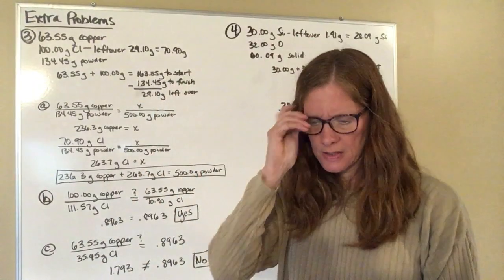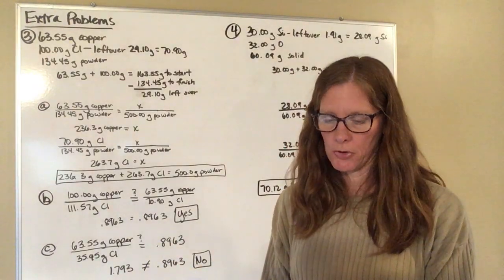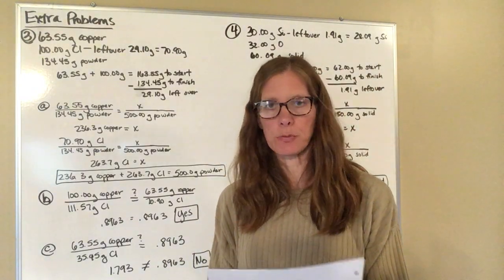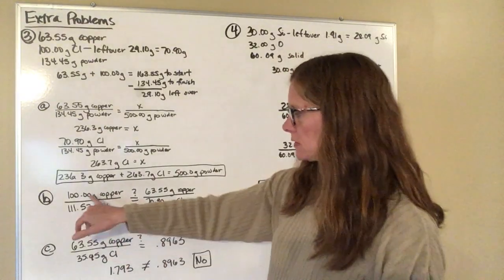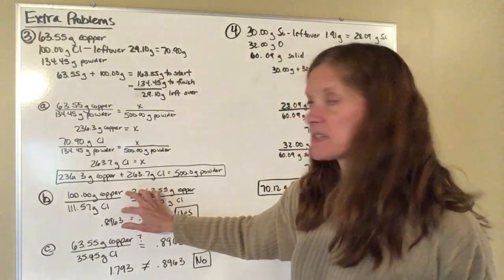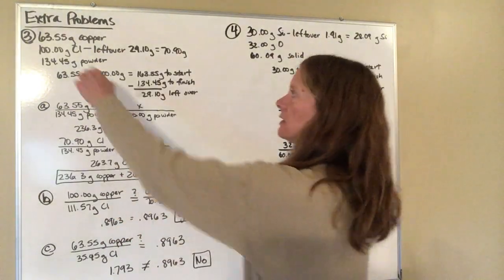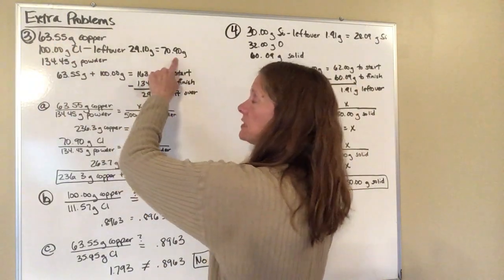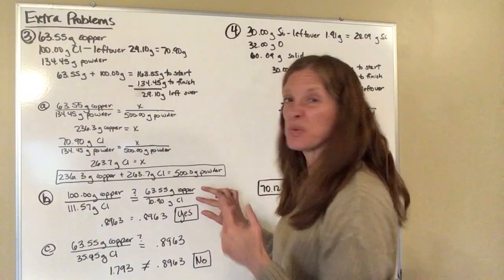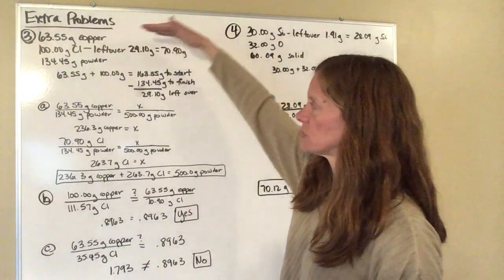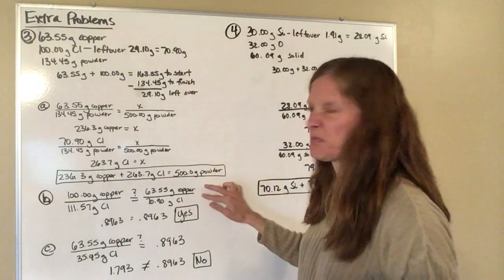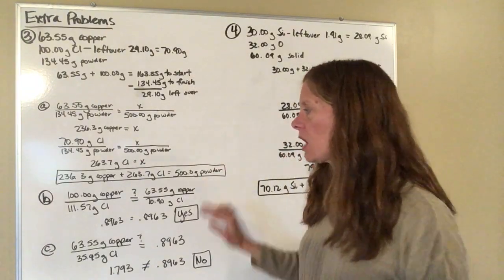Alright part B says another chemist combines 100 grams of copper with 111.57 grams of chlorine to make a solid. There are no leftovers. Is this the same compound as the light blue powder made in A? So here they've combined 100 grams of copper with 111.57 grams of chlorine. So I'm looking for the ratio between the two and I want to know if that's the same ratio that was made in part A where I had the 63.55 grams of copper combined with the 70.90 grams of chlorine. So you could also have used these numbers if you would have wanted to. It really doesn't make any difference because the two powders, the initial powder that they gave you and the powder that you calculated in part A would have been the same thing anyway. I chose to use these other numbers just because they were smaller but the ratio should have come out the same either direction.